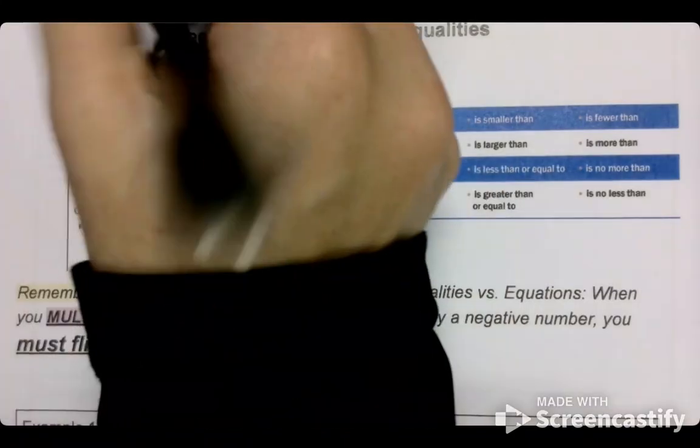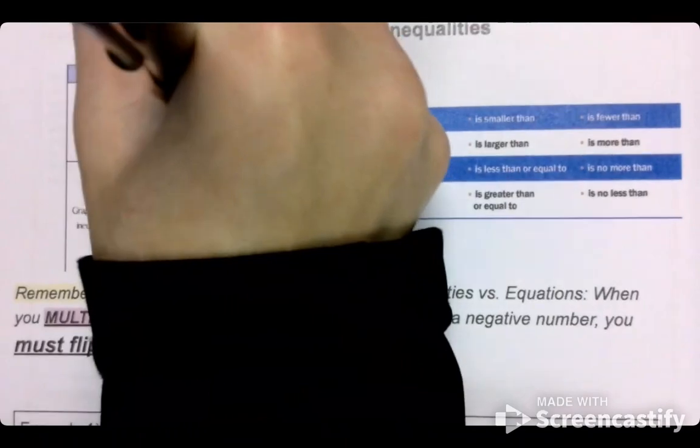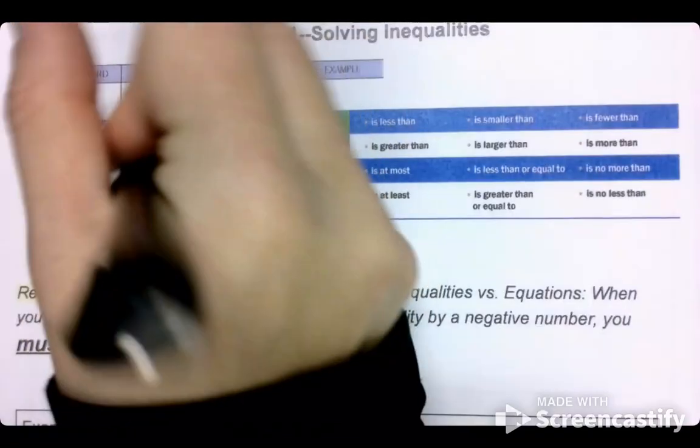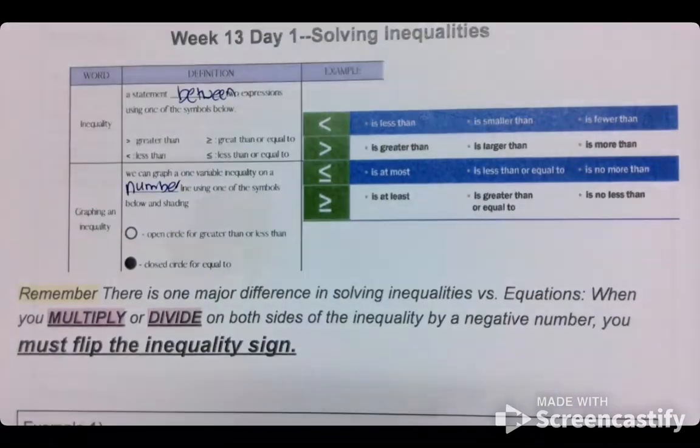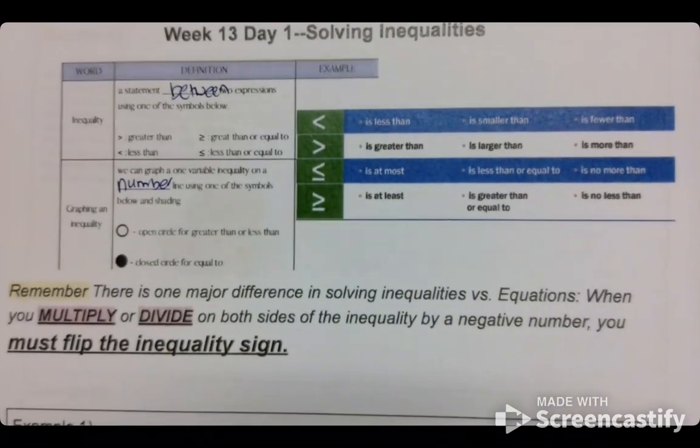So again, we have a statement between, and then this is going to be a number line. I'm not worried about necessarily the number line. I'm worried about comparing two things.